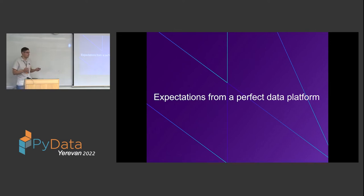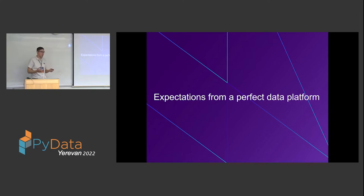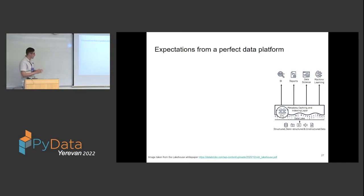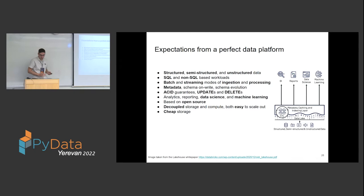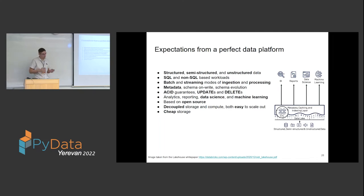We've achieved a lot with these systems, but we've also seen many limitations. So what would we expect from a perfect data platform that would solve everything? From the picture we can see that we'd want one central data platform storing all types of data and covering all the different use cases. Referring to the characteristics of both the data warehouse and data lake, we want the advantages of both: structured, semi-structured, and unstructured data; SQL and non-SQL workloads.